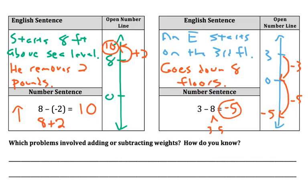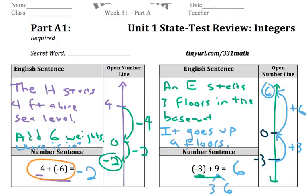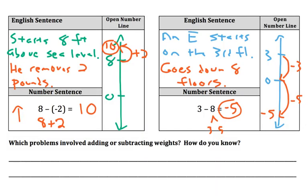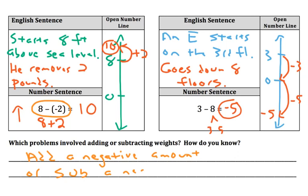Which problems involved adding or subtracting weights? If we look back at the beginning, the first problem did, because we were adding a negative amount — we were adding weight. The second problem did not. The third problem did, because we were subtracting a negative amount, or subtracting weights. So whenever you add a negative amount or subtract a negative amount, that's a weight problem. For example, 5 plus negative 3 is adding a negative amount — that goes down. And subtracting a negative amount, the top one is adding 3 pounds of weight and the bottom is subtracting 2 pounds of weight.